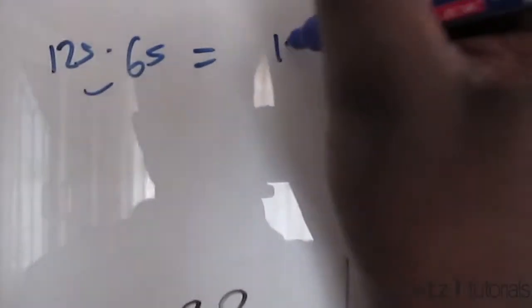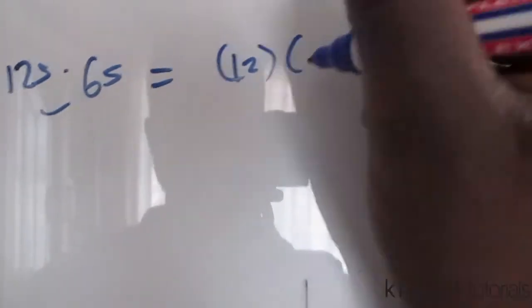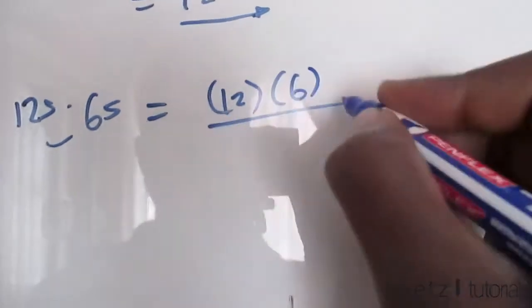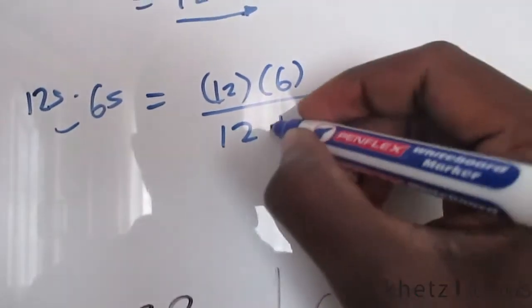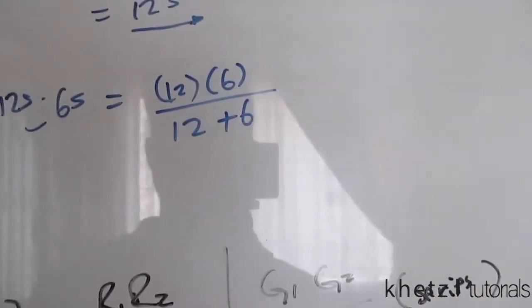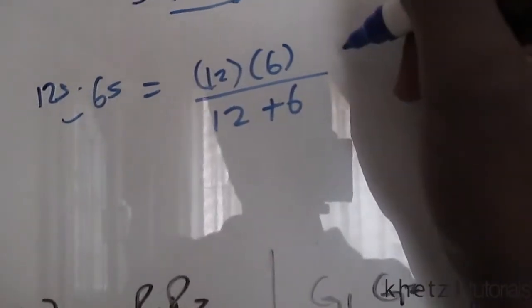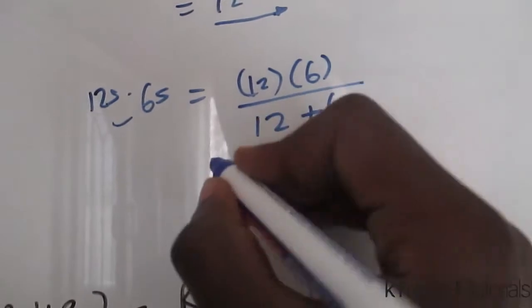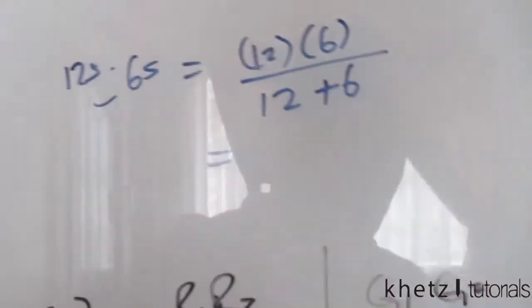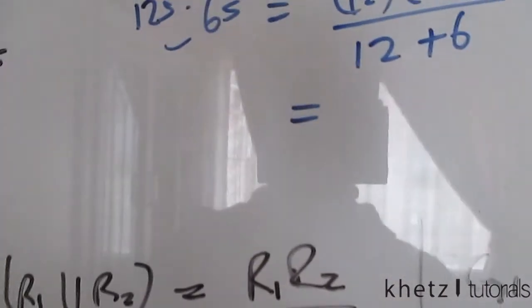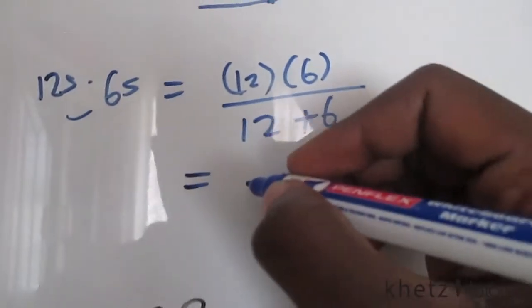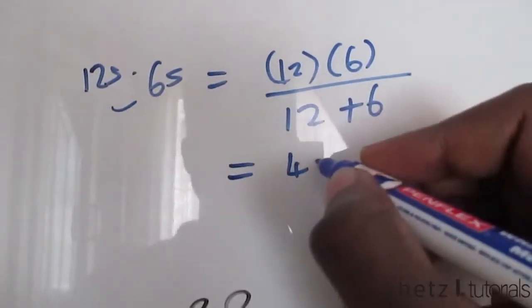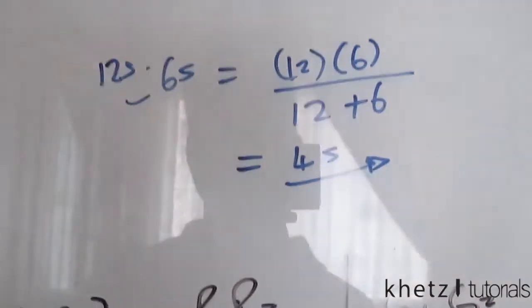So apply this formula. It says 12 multiplied by six divided by 12 plus six. So this is 72 divided by 18, which is four. All right, four Siemens. Okay.